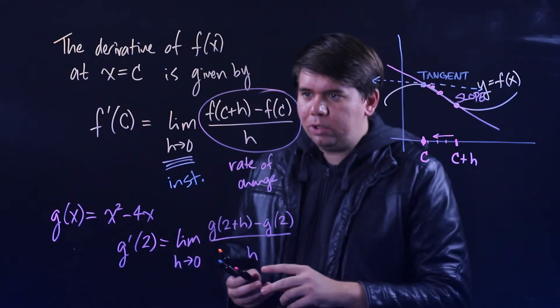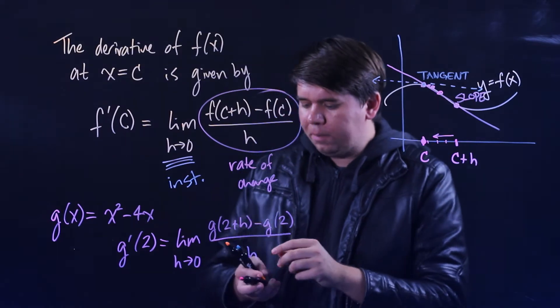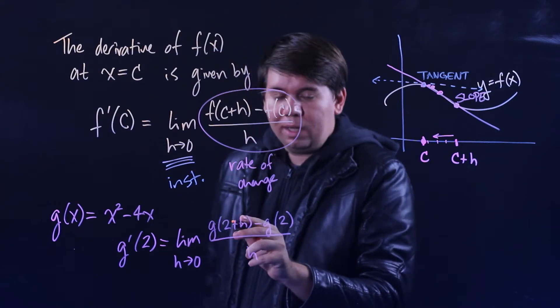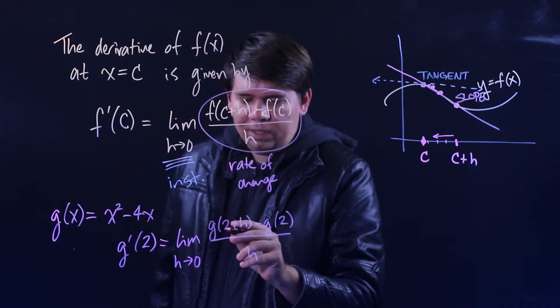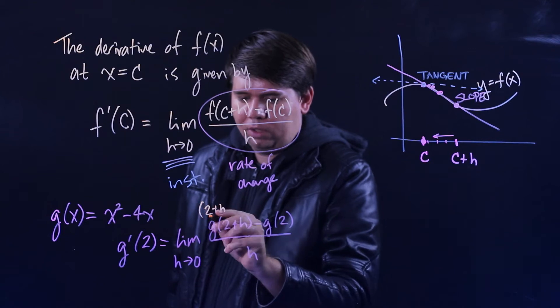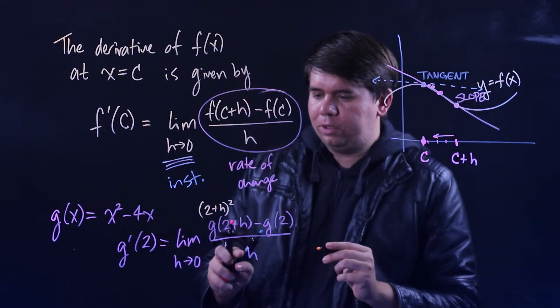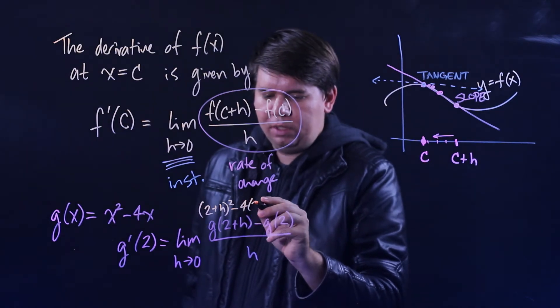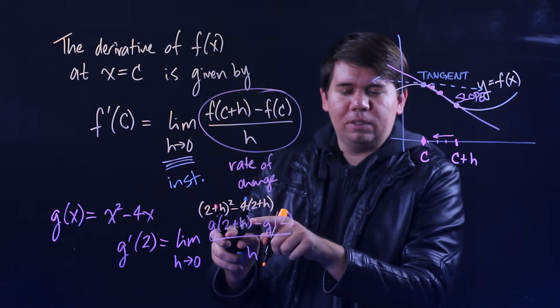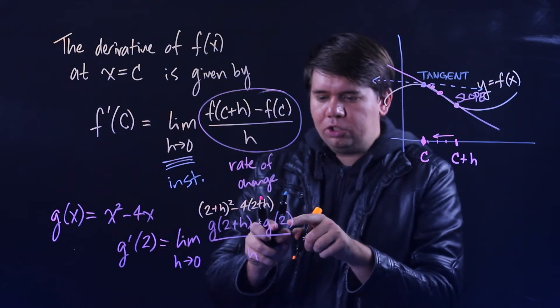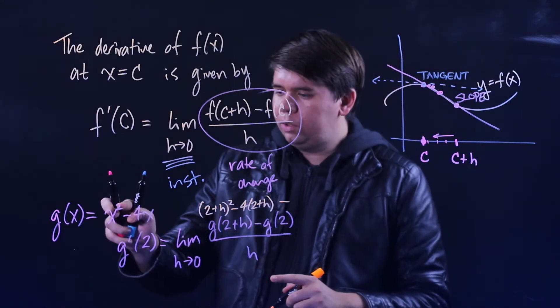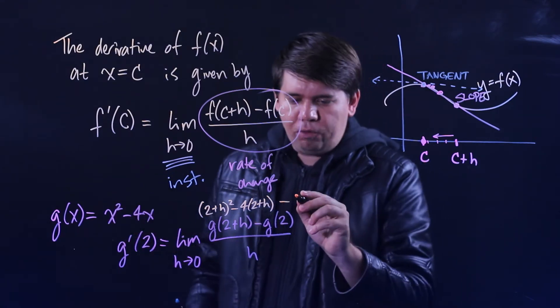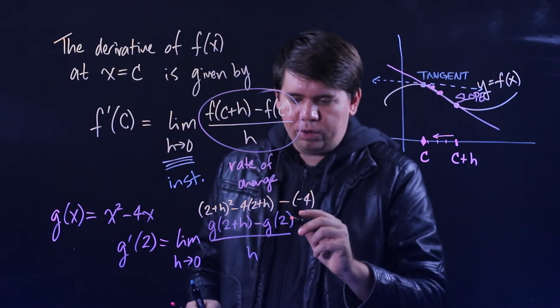The only tricky part is making sure we actually plug everything in properly. So here I'm plugging in a 2 plus h, so wherever I see x I'm plugging in 2 plus h. So instead of x squared I'm going to get here (2+h) will be squared for this first term. Instead of 4x I'll get minus 4 times (2+h), that's all coming from this first term. And then for the g(2), just plug 2 into it. 2 squared is 4 minus 4 times 2 is 8. 4 minus 8 is negative 4, so minus negative 4.